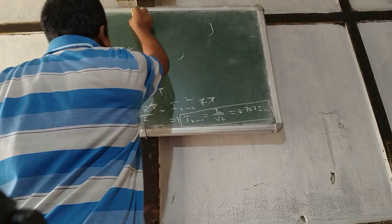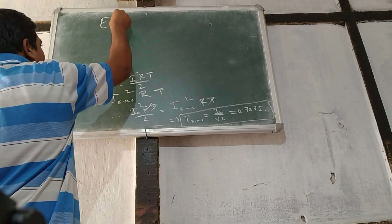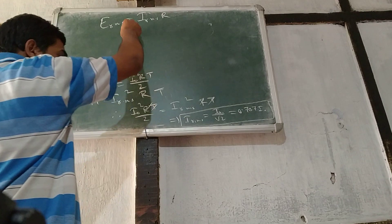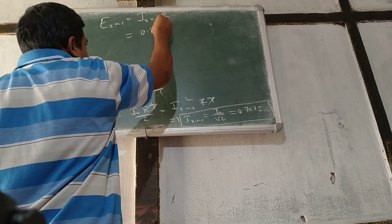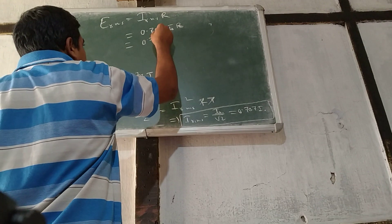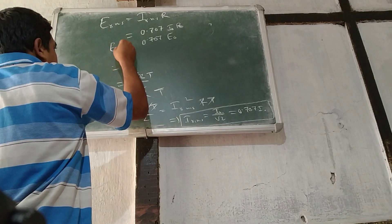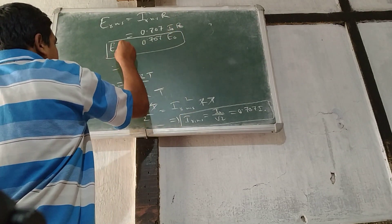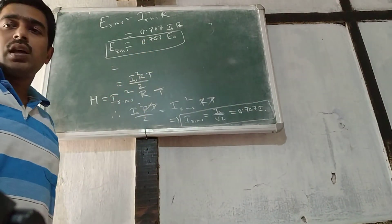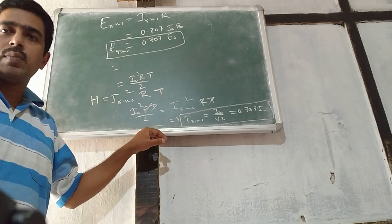Similarly, for voltage or EMF, E_rms equals I_rms times R, so this will be 0.707 of I₀ times R, which gives E_rms equal to 0.707 of E₀. So the RMS value is 0.707 times the maximum or peak value — I_rms is 0.707 times peak current, and E_rms is 0.707 times peak EMF.